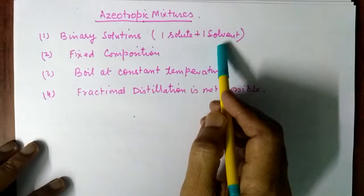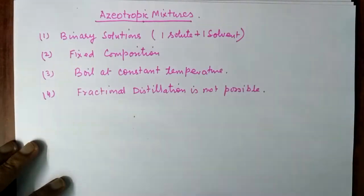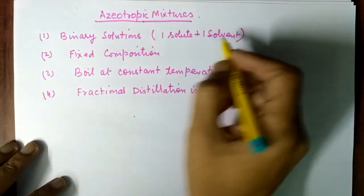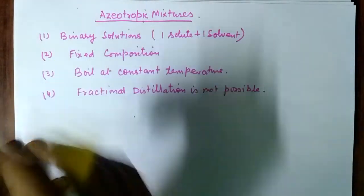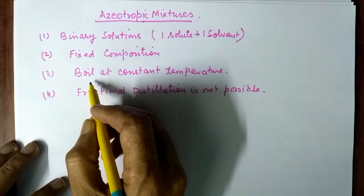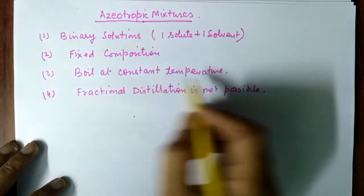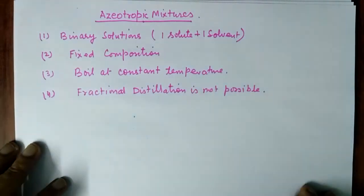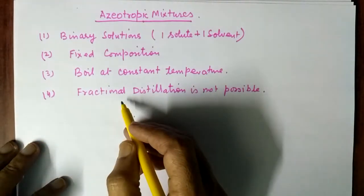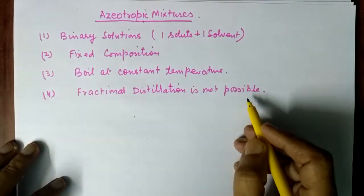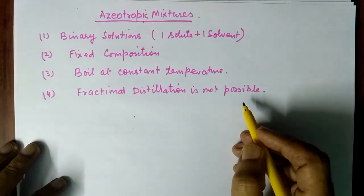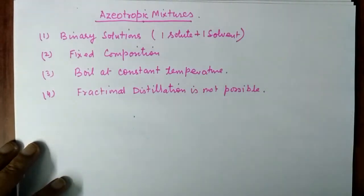There is only one solute and one solvent, and there is a fixed composition of solute and solvent in solution. This is the second characteristic. The third characteristic is that the mixture boils at constant temperature. The fourth characteristic is that fractional distillation is not possible — we cannot separate solute and solvent using the fractional distillation method.